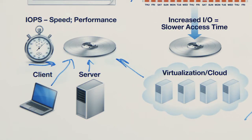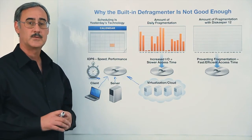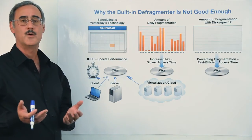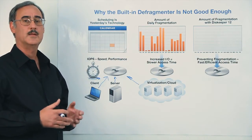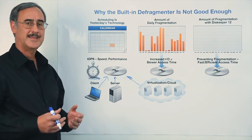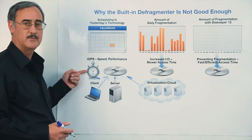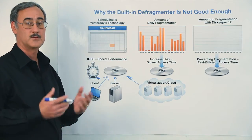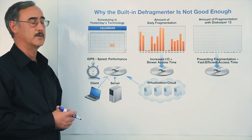Now, one of the things that occurs within the NTFS file system within Windows is a phenomenon known as fragmentation. Files will be written into many different pieces, and as a result, each of those pieces requires a separate individual I.O. transaction. As we've already stated, each I.O. takes a measurable amount of time.